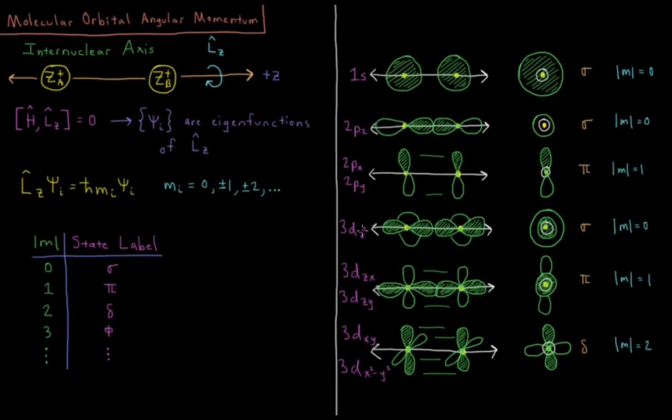For 3dz squared, again, this is looking down the axis. If I look down the axis, it looks cylindrically symmetric. The 3dz squared in diatomics gives us sigma orbitals.